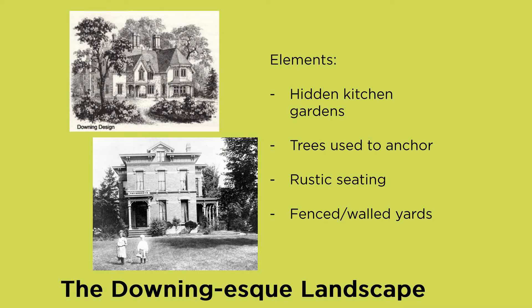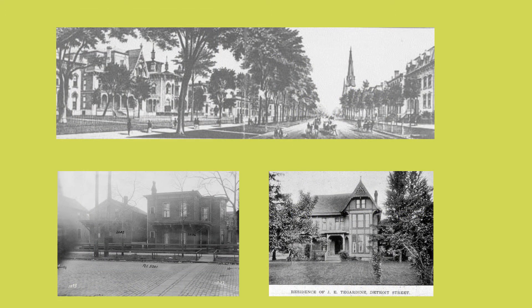Still within the Downing-esque landscape, we do still see kitchen gardens, but they were often hidden or screened. Trees were used as anchors — they anchored corners of buildings and framed views. He was in favor of employing rustic elements like rustic seating, and also used fences and walls along property lines, especially on urban lots. Here we see various views of Euclid Avenue illustrating some of his principles: open lawns, trees used to frame views, fenced lots, etc.